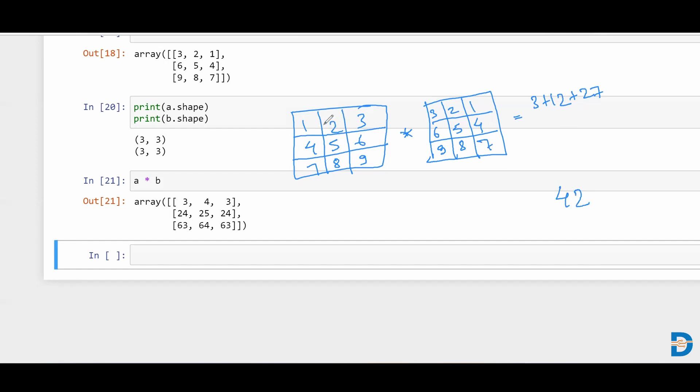Similarly, in the second, this row, the first row is getting multiplied with the second column. So one multiplied by two is two. Let me just remove this.